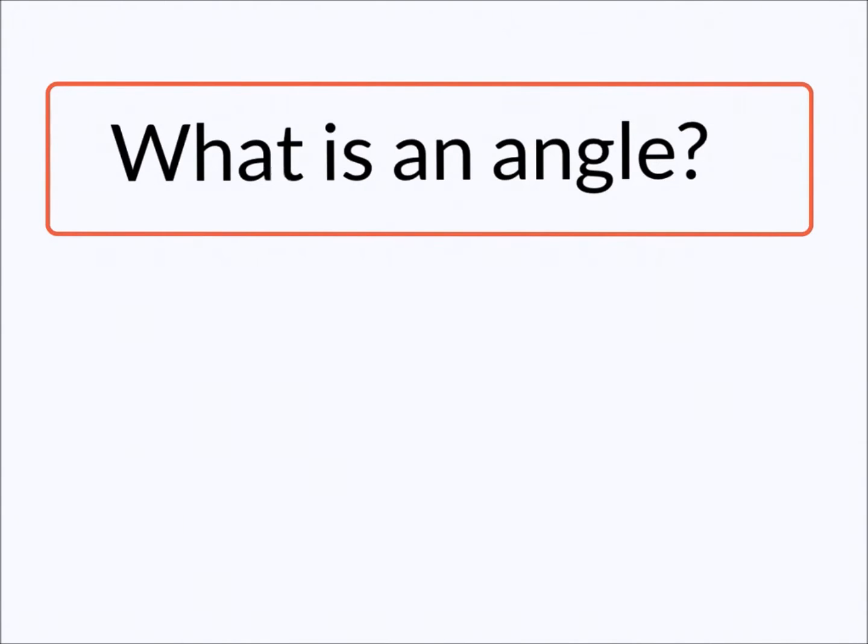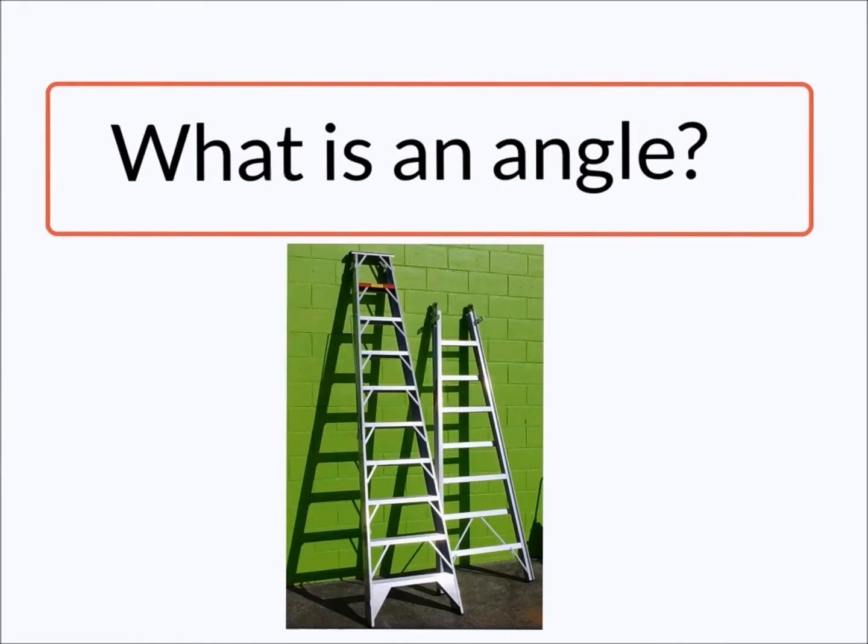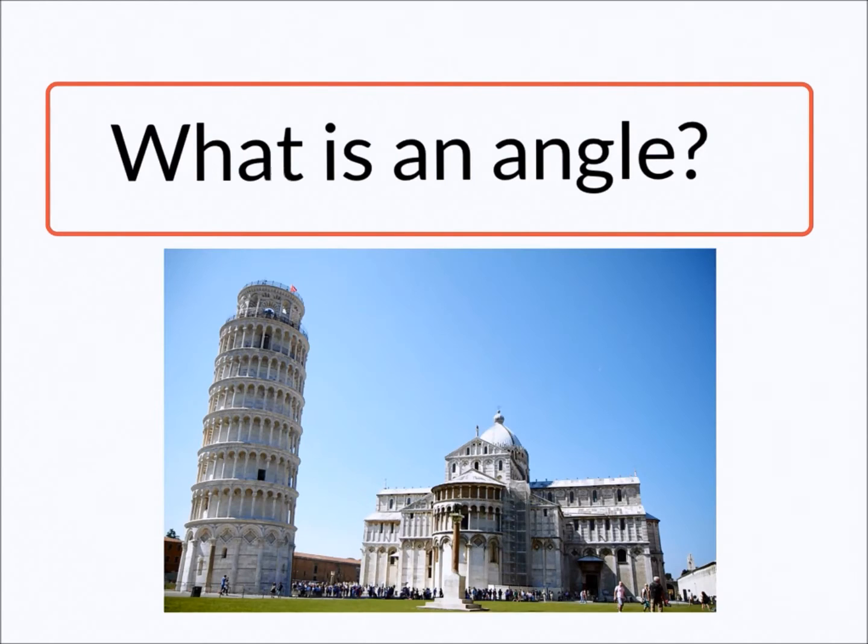As we just saw in the video, angles are everywhere. But you might be asking right now, where were they? Here we have a staircase. In red you can see the angle that is formed with the stairs with respect to the floor. Here we see two ladders, and we can also see in red the angle that is formed with the ladder with respect to the wall. Here we can see a building that is leaning, the leaning tower of Pisa. The red lines show its angle of inclination.